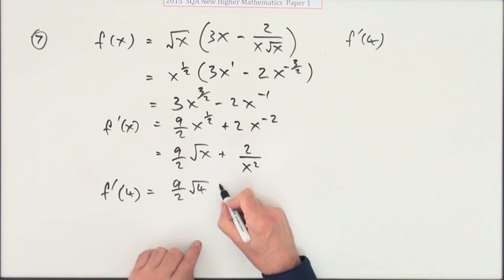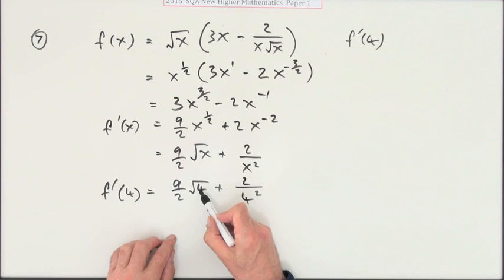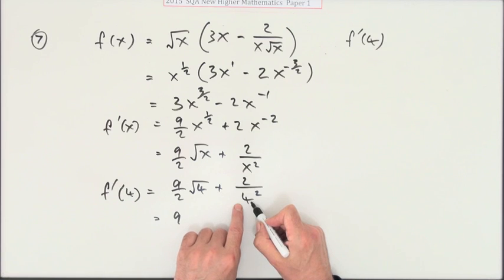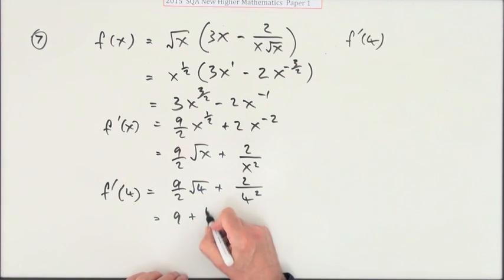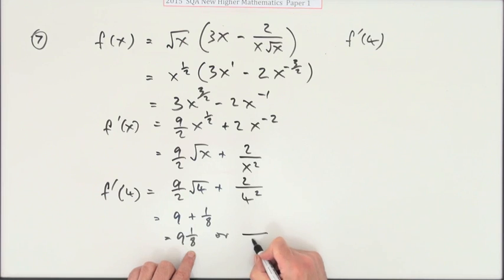So 9/2 times root 4 plus 2 over 4 squared. Well, the square root of 4 is 2, so the 2s cancel, leaving 9/2. 4 squared is 16, 2 over 16 is an eighth. So you can either say 9 and an eighth, or as a single fraction, 73/8.